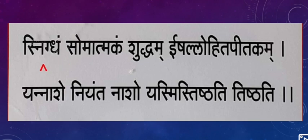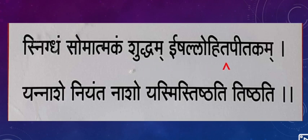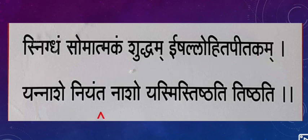The next characteristics: Ojas is Snigdha (oily/unctuous), Soma-atmaka means whiteness - so it has a white nature. Ishad lohita-pitaka - slightly red and yellow color, like a low-it pita combination. Pita means pila (yellow) color, lohit means blood-red. So Ojas is slightly reddish-yellow in appearance.